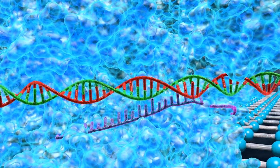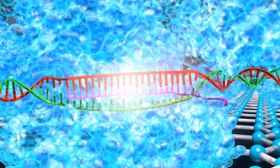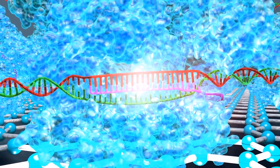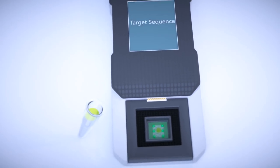But if it scans and finds its target, then it will bind to it. Then this binding will create an additional charge on top of the graphene surface and this can be sensed with CRISPR chip.